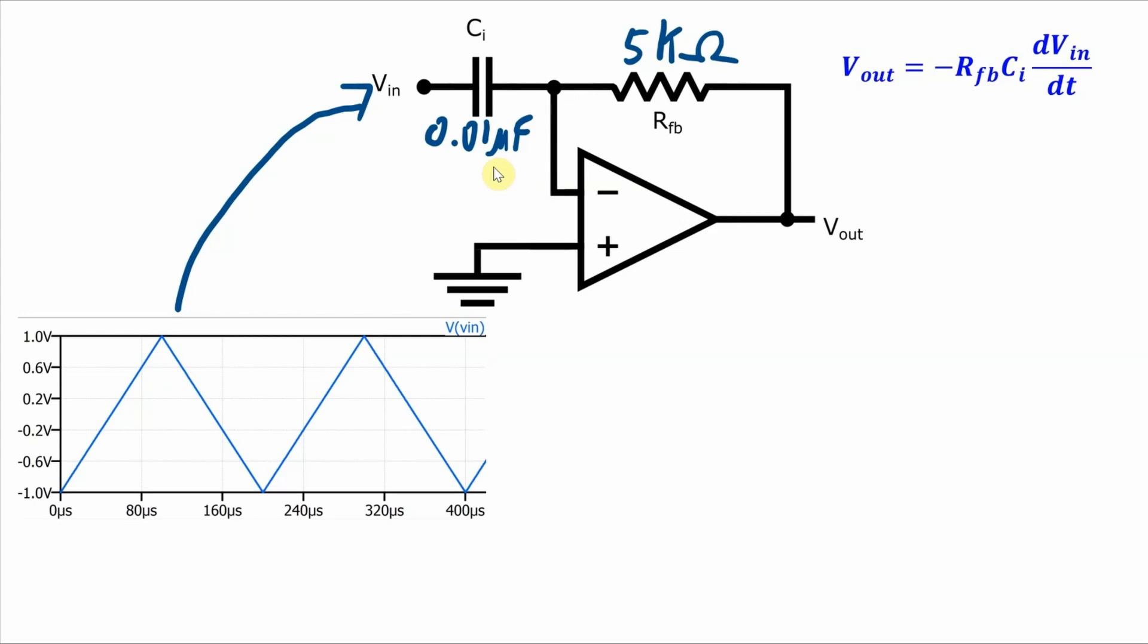Well, we're going to have to break this up into two parts because Vin has two distinct parts to it. There's the rising edge of the triangle and then the falling edge of the triangle. Let's look at the increasing part, this rising edge part first.